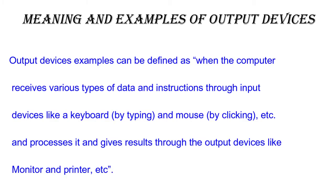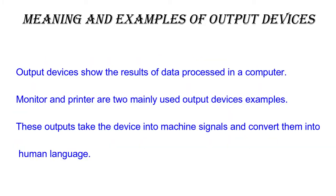Output devices can be defined as when the computer receives various types of data and instructions through input devices like a keyboard by typing, and mouse by clicking, etc. It processes the data and gives results through output devices like a monitor and printer. Output devices show the results of data processed in a computer, and they convert machine signals into human language.